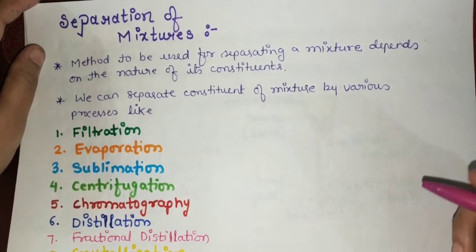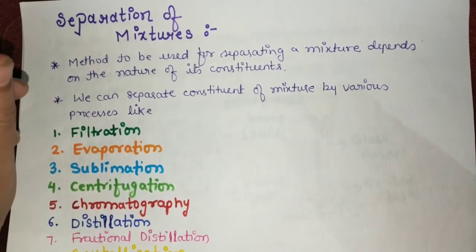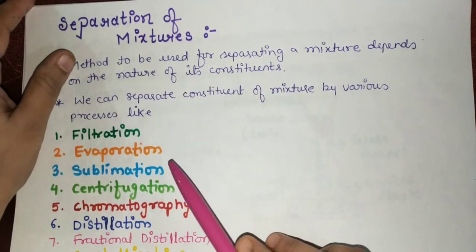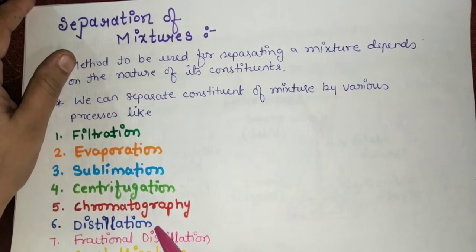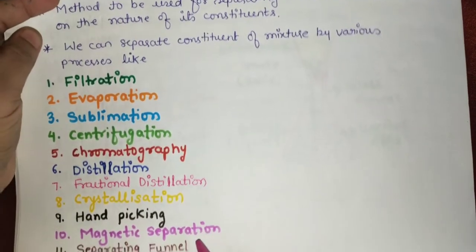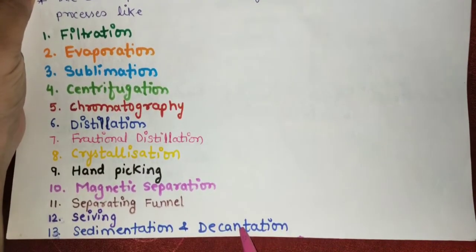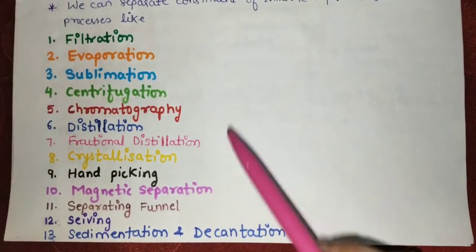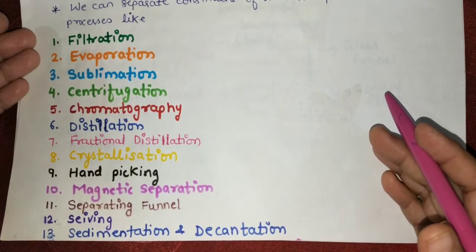We can separate the constituents of a mixture — whether homogeneous or heterogeneous — by various processes like filtration, evaporation, sublimation, centrifugation, chromatography, distillation, fractional distillation, crystallization, hand-picking, magnetic separation, separating funnel, sieving, and sedimentation and decantation. These are some of the physical methods by which we can separate mixtures.